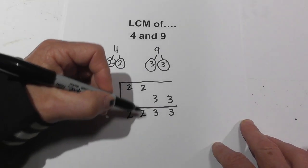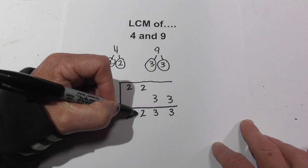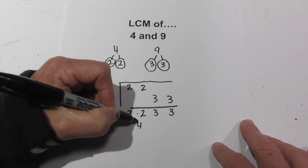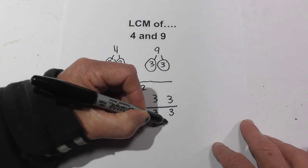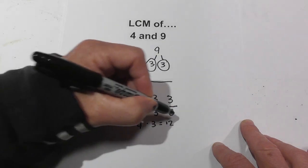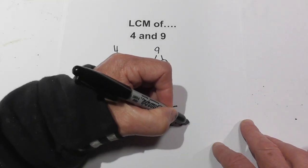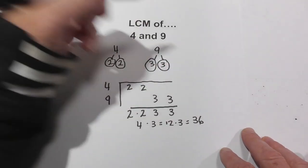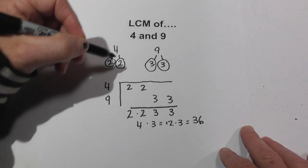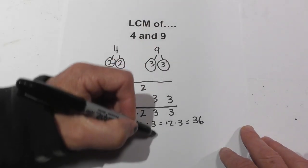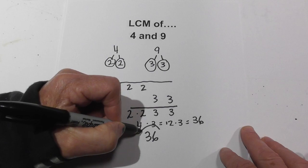Now all I do is multiply these numbers together. 2 times 2 is 4. 4 times 3 is 12. 12 times 3 is 36. So the LCM of 4 and 9 is 36.